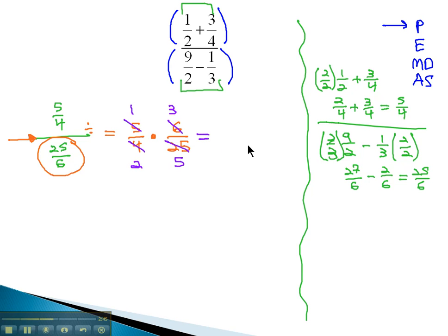And then we remember to multiply fractions, we multiply straight across both numerator and denominator. One times three is three, and two times five is ten. We have our final solution of three-tenths.